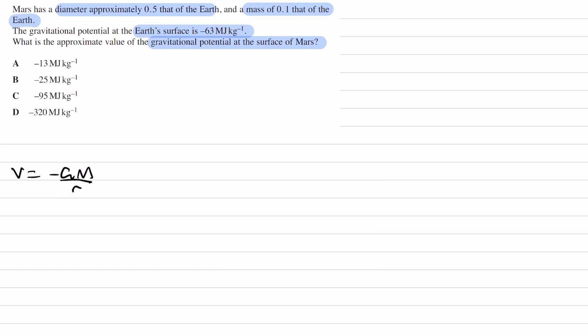Let's write down the information from this question. The diameter of Mars is equal to 0.5 or half that of Earth, and the mass of Mars is equal to 0.1 or a tenth that of Earth. The gravitational potential at the surface of Earth is equal to minus 63 megajoules per kilogram.